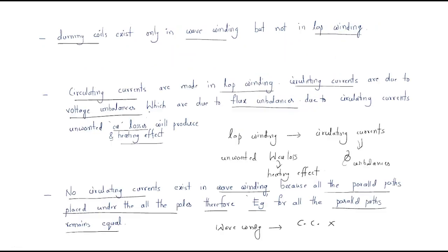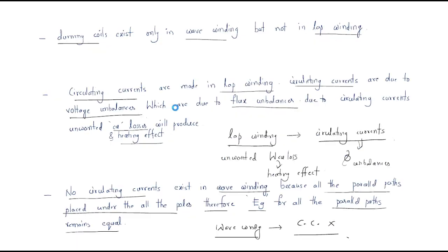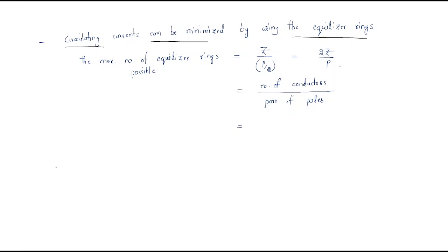These circulating currents can be minimized by using equalizer rings. Generally we use equalizer rings to decrease the circulating currents. To understand how it operates, we will first look at the formula for the maximum number of equalizer rings, which is Z divided by P by 2.